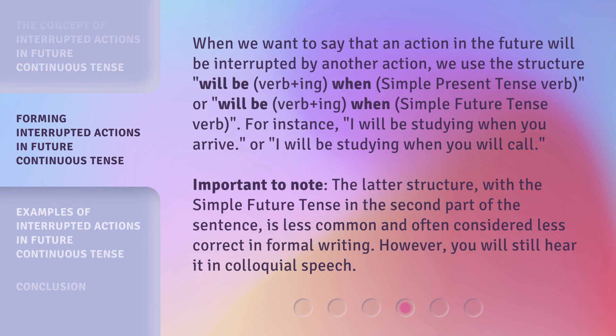When we want to say that an action in the future will be interrupted by another action, we use the structure: 'will be' + verb + '-ing' + 'when' + simple present tense verb; or 'will be' + verb + '-ing' + 'when' + simple future tense verb. For instance: 'I will be studying when you arrive,' or 'I will be studying when you will call.' Important to note: the latter structure, with the simple future tense in the second part, is less common and often considered less correct in formal writing. However, you will still hear it in colloquial speech.